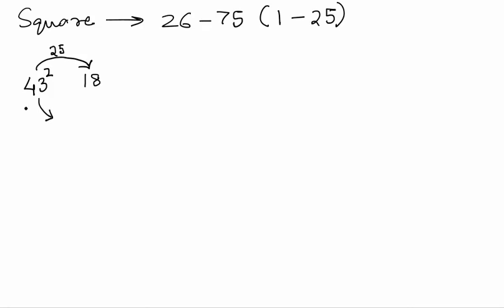And here, just find the difference of 43 and 50, so 50 minus 43 is 7. We now square this and what we get is 49. Just put these two numbers together and the answer is 1849. It's as simple as that.